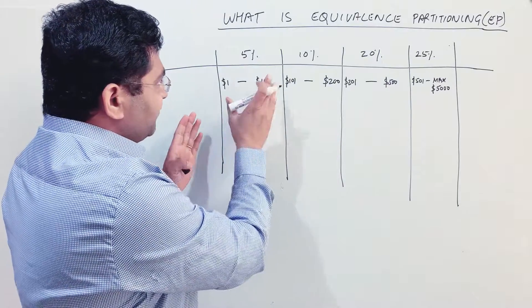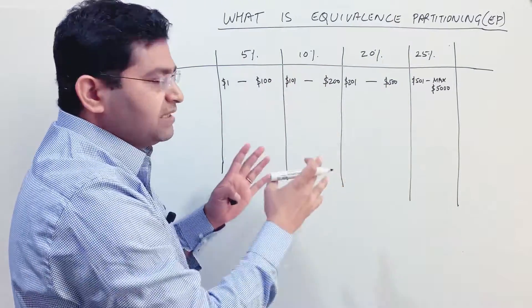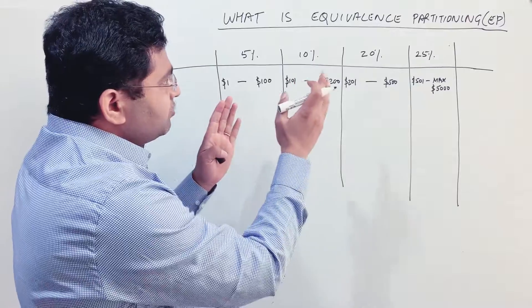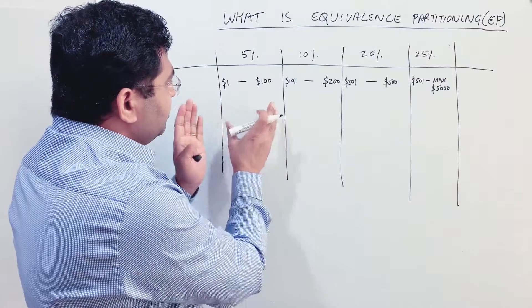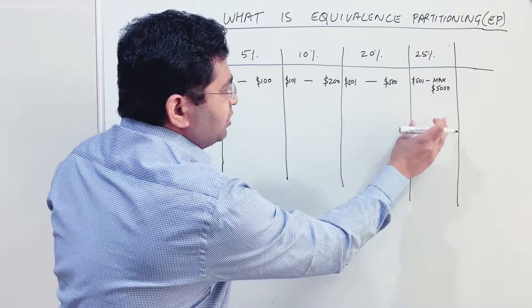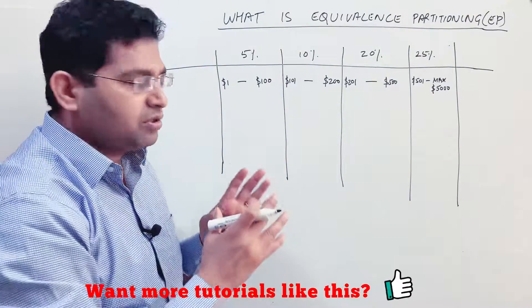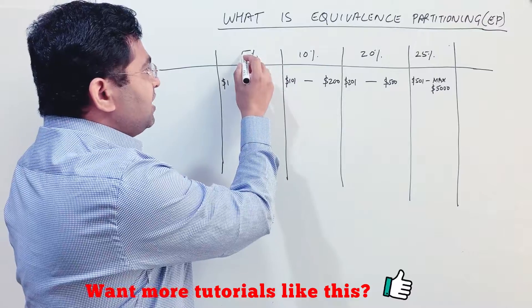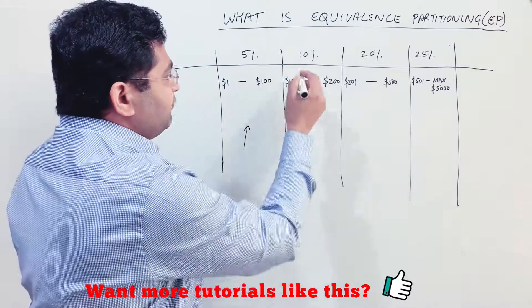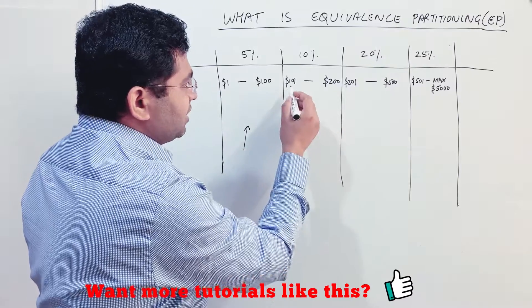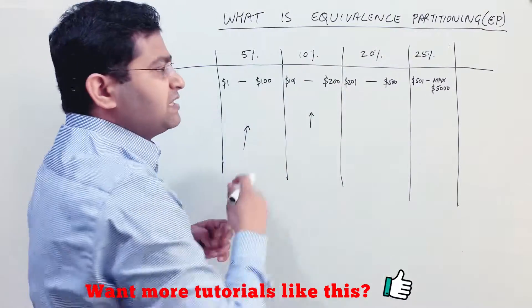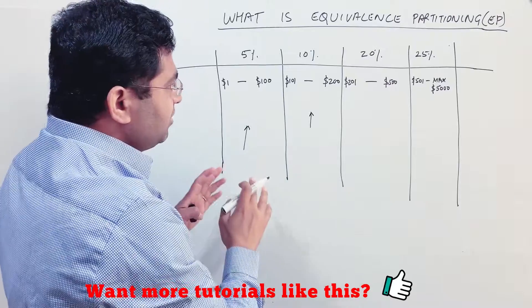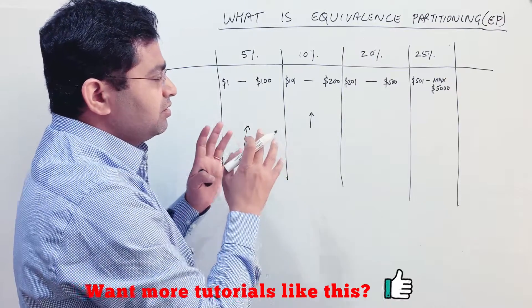Now if we talk about equivalence partitioning, we have divided the discount percentages on the e-commerce portal into different partitions. The partitions of 5%, 10%, 20%, and 25% are each considered equal within themselves. If you pick any purchase value from $1 to $100, it will be considered the same and a 5% discount will be applied. Similarly, any value from $101 to $200 should give a 10% discount.